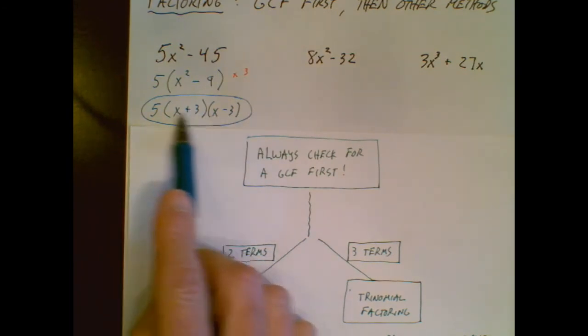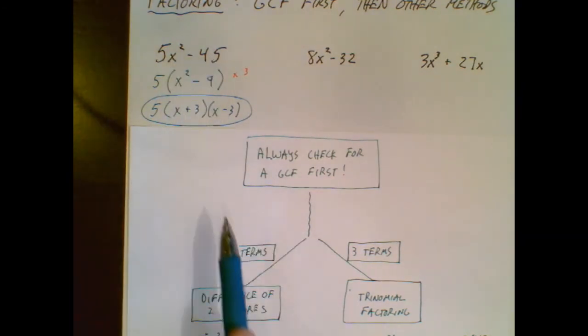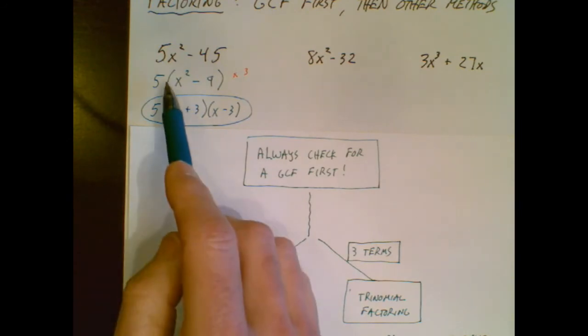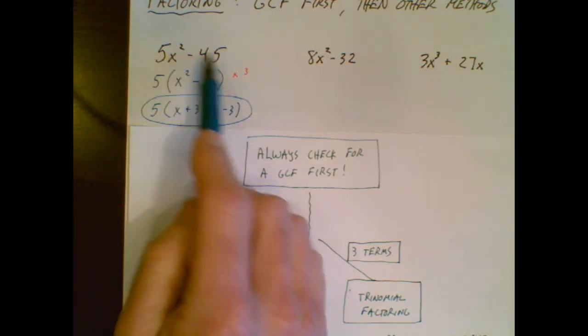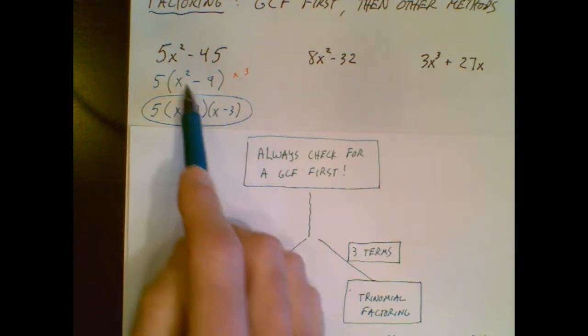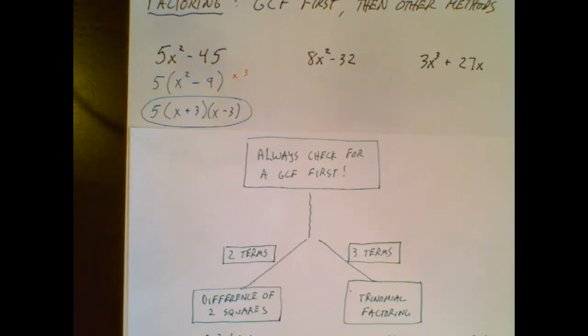This is the factored form of that. It's a little bit more difficult to multiply this out to see if you come back to that. But if you do this at every turn, equals that, and equals that, you'll know you're also right.